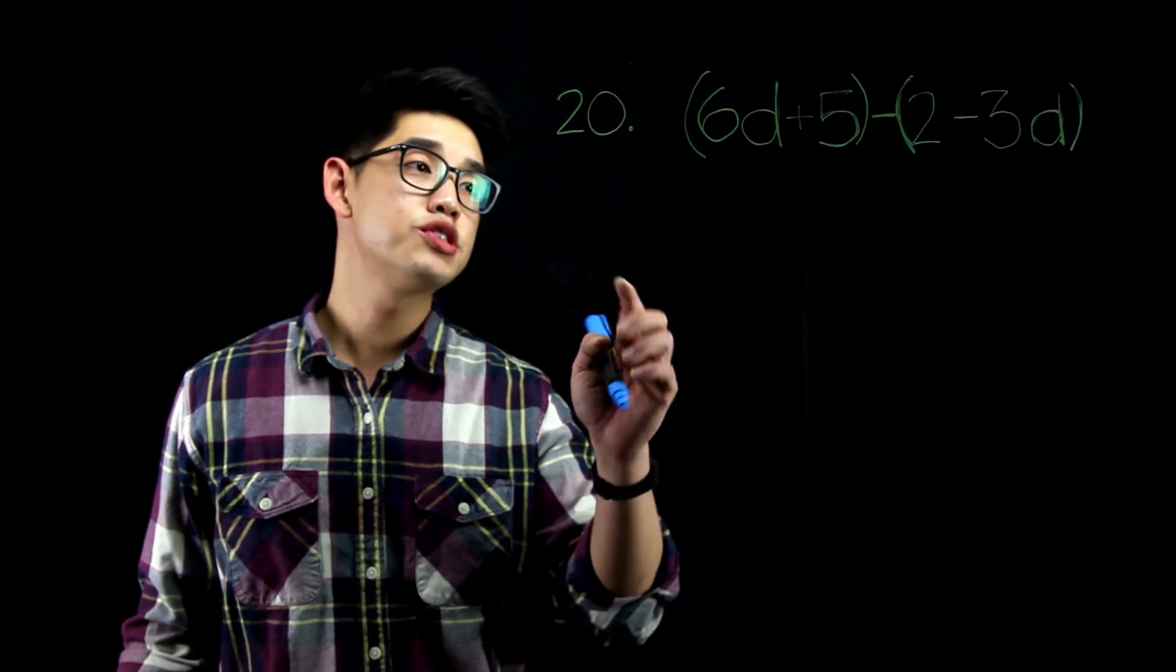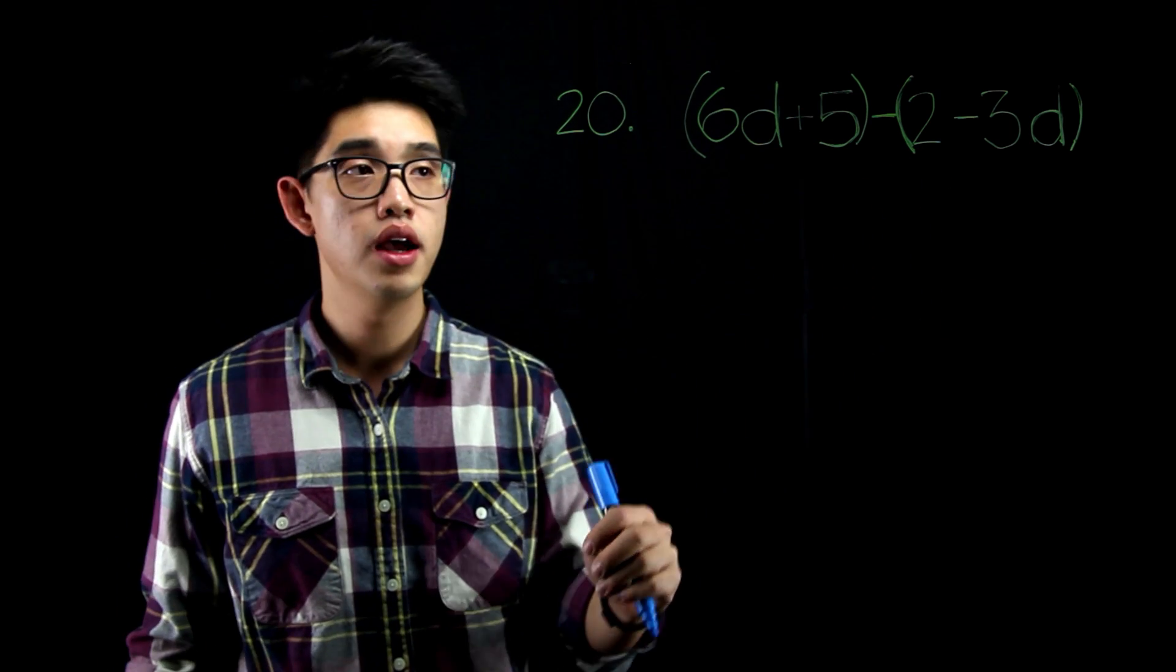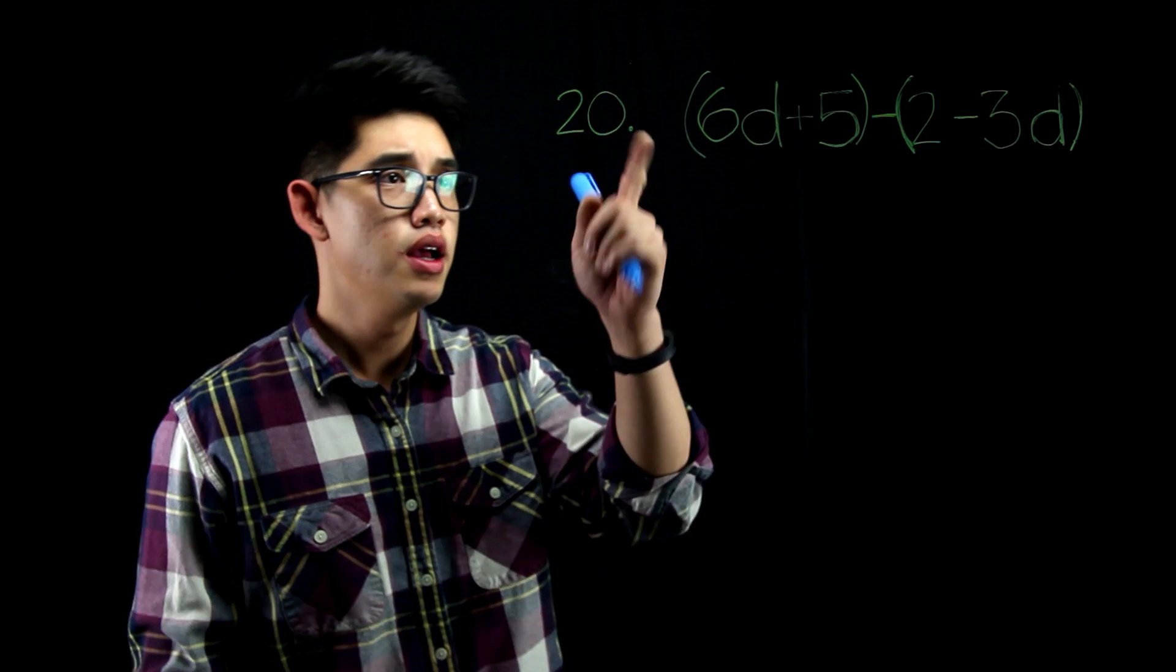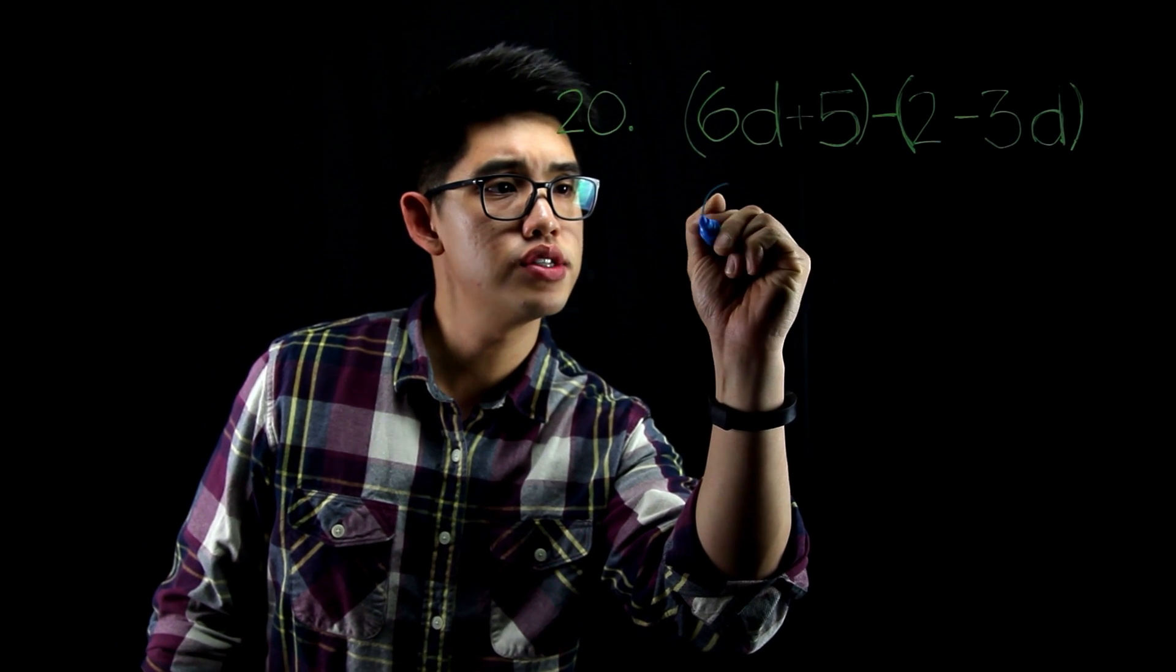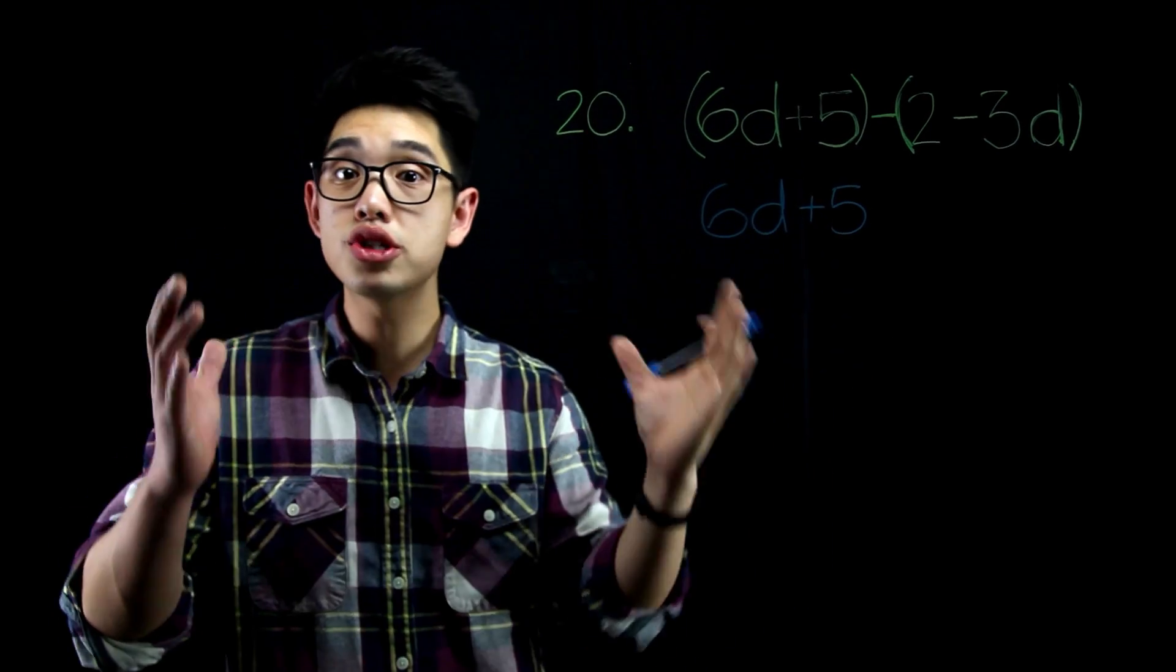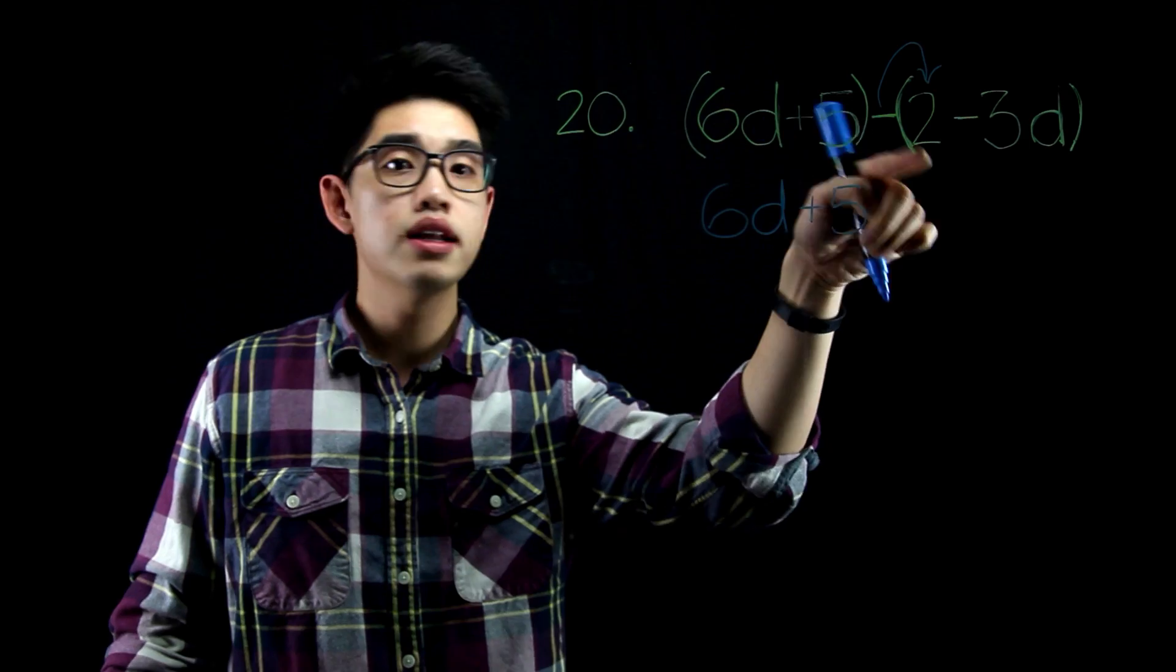For number 20, I have two linear expressions. 6d plus 5 minus the quantity 2 minus 3d. This is a little bit of a tricky problem. But let me go on here first and write 6d plus 5. And this is where a lot of students get it wrong. They see the minus. So then you have to distribute the negative to the 2 because you're subtracting 2. You're taking away 2.